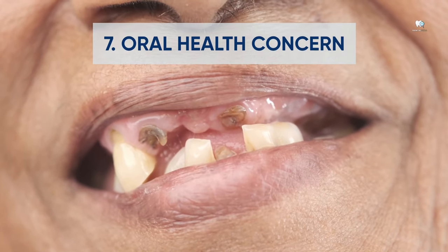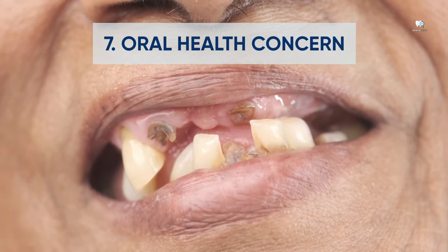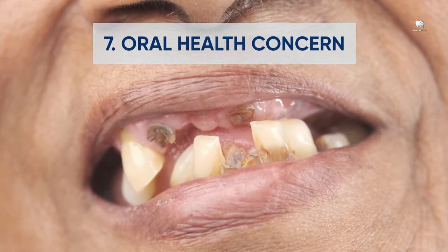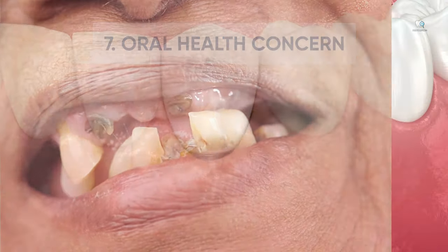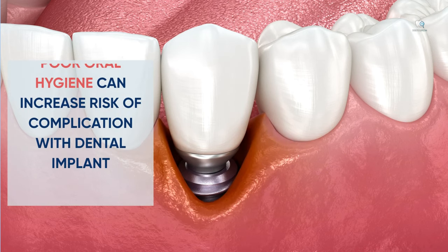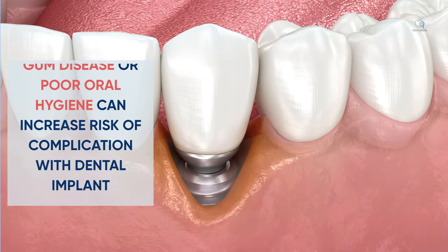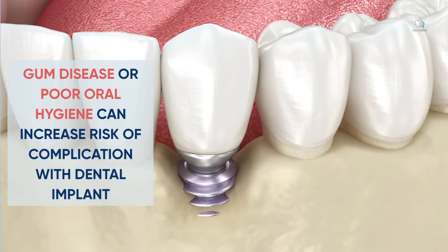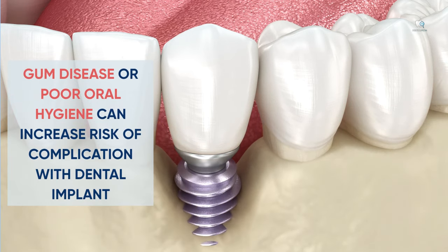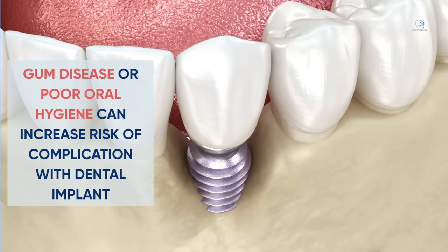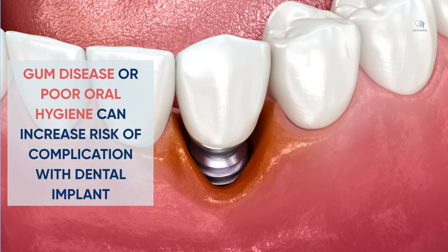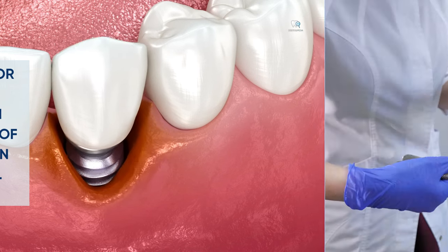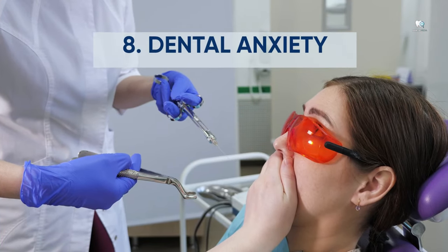Reason seven: oral health concerns. An important reason to consider alternatives to dental implants is if you have specific oral health concerns. Certain conditions, such as gum disease or inadequate oral hygiene, can increase the risk of complications with dental implants. Exploring alternative treatments may be a more suitable option for individuals with ongoing oral health issues.